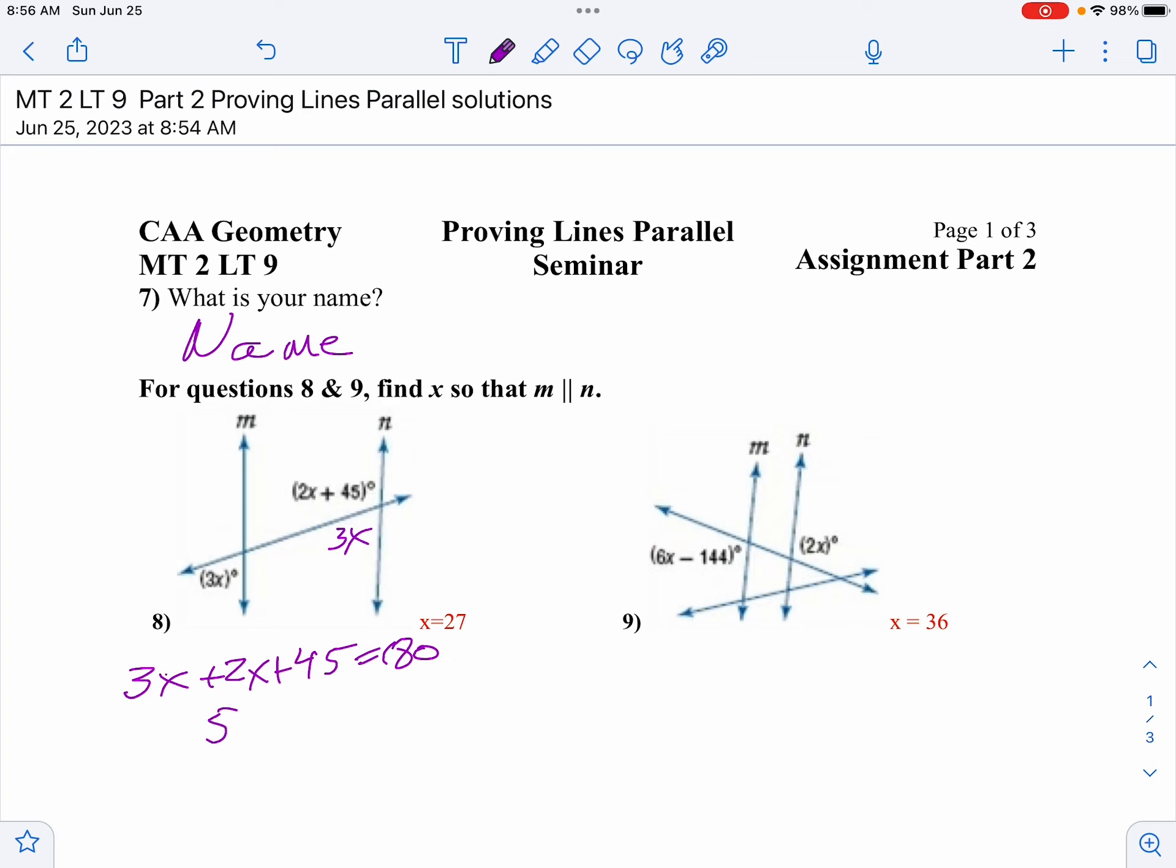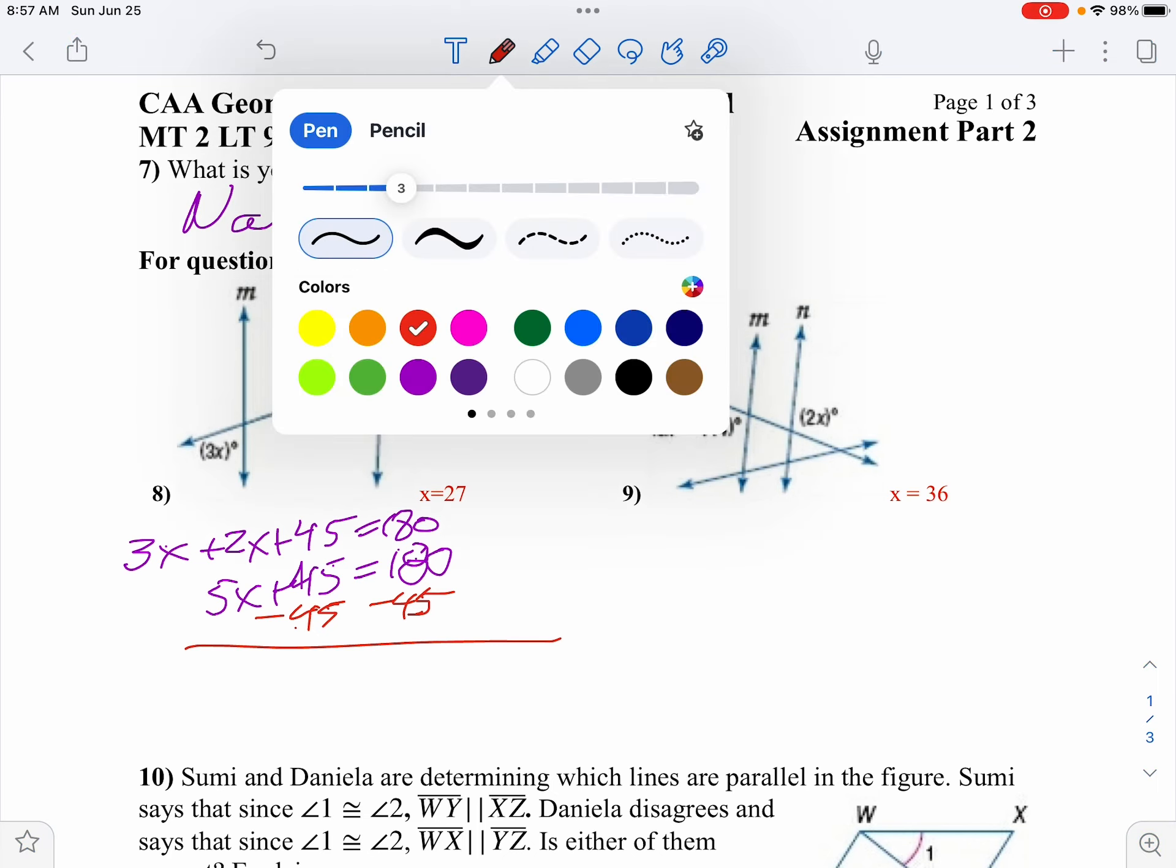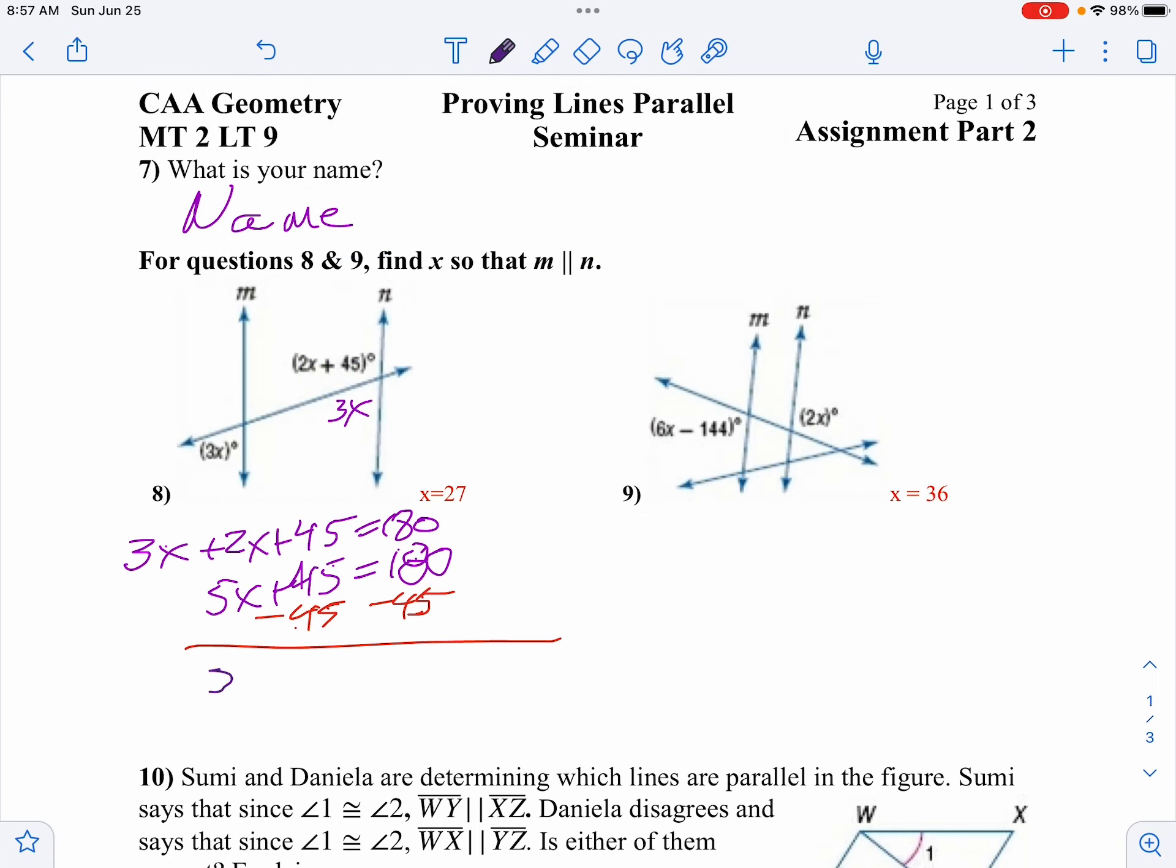Or 5x plus 45 would be 180. Well let's subtract 45 from both sides. And I'll bring this down here to show a bit more work. So 5x equals 180 minus 45. So that's 135. I'll divide both sides by 5. And x is 27.